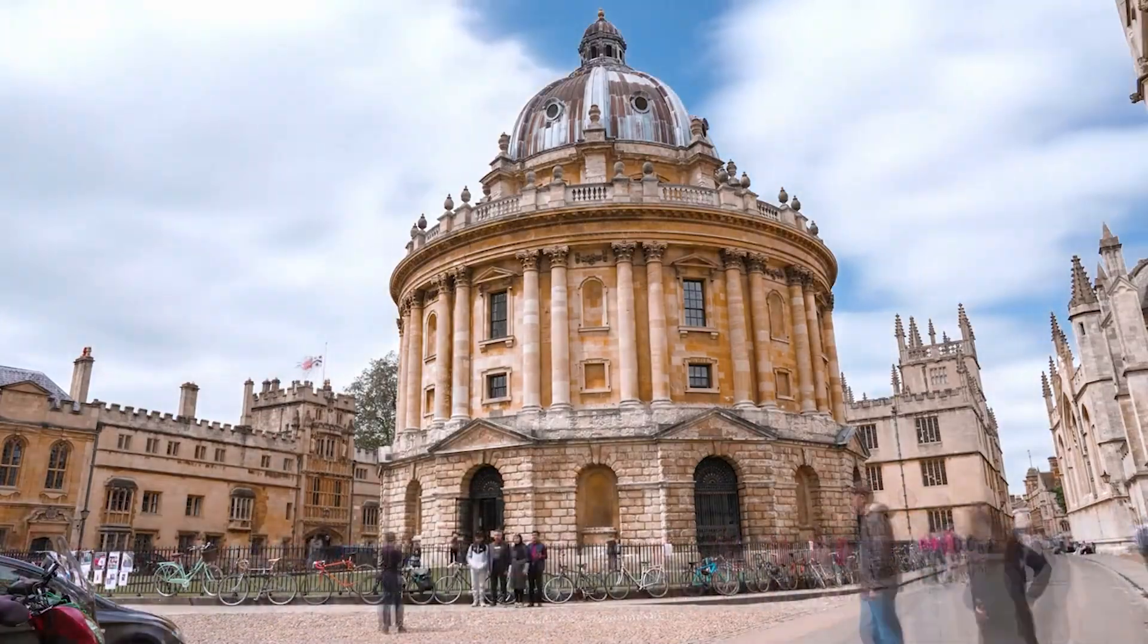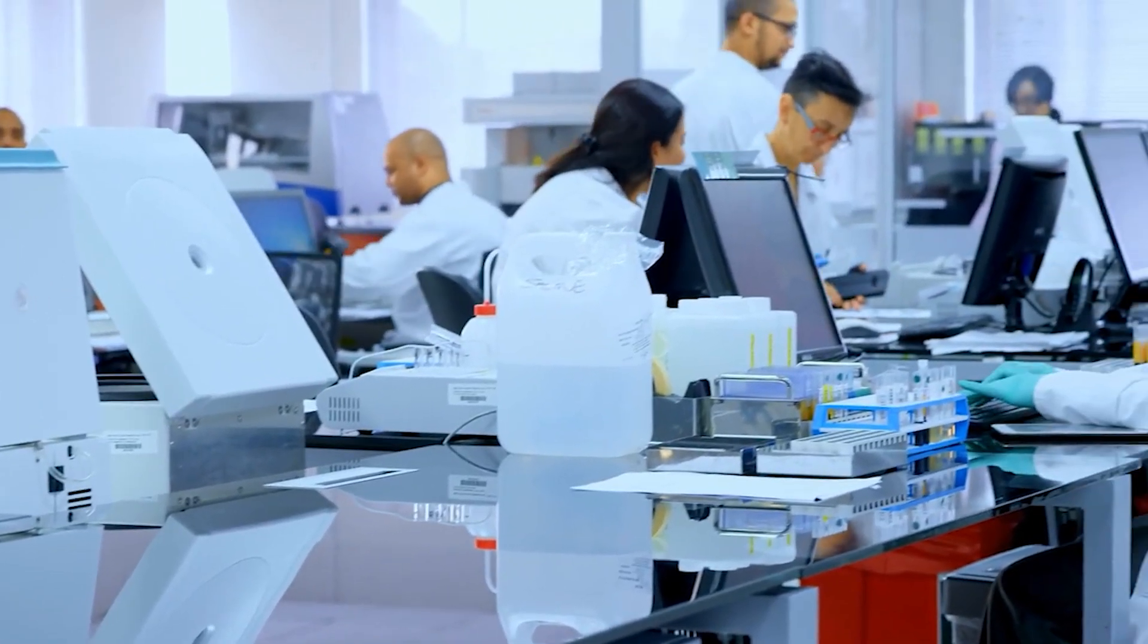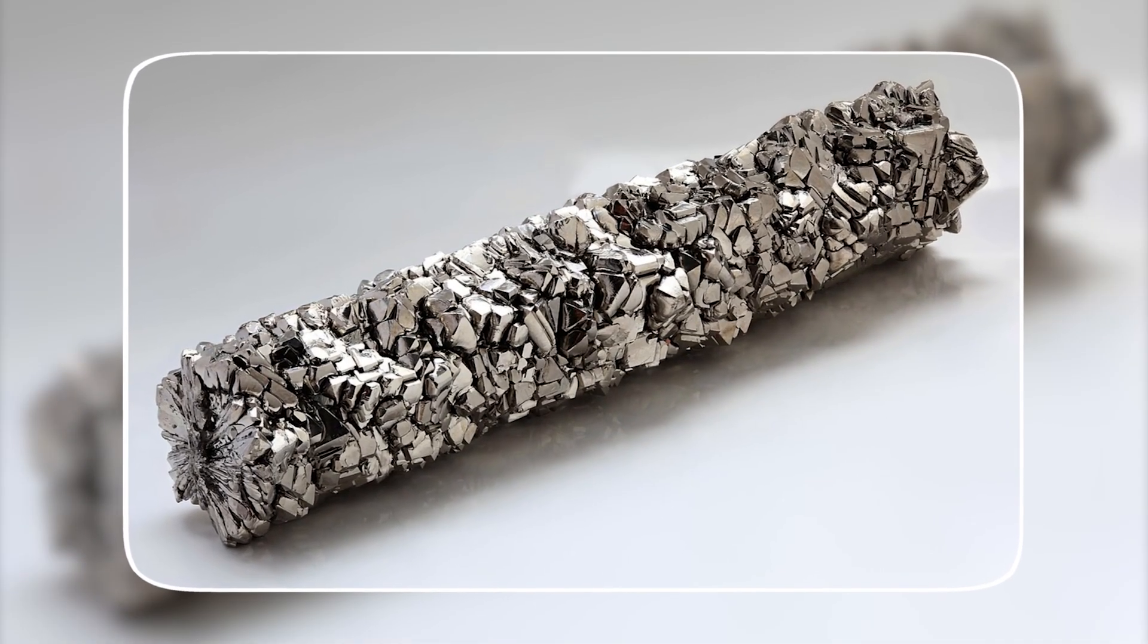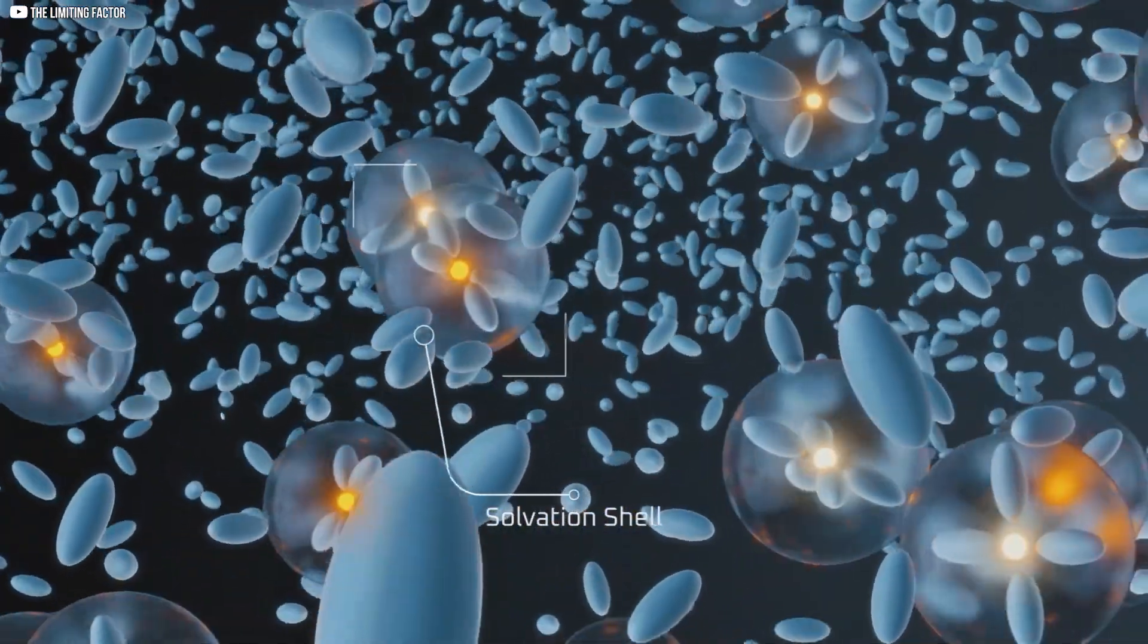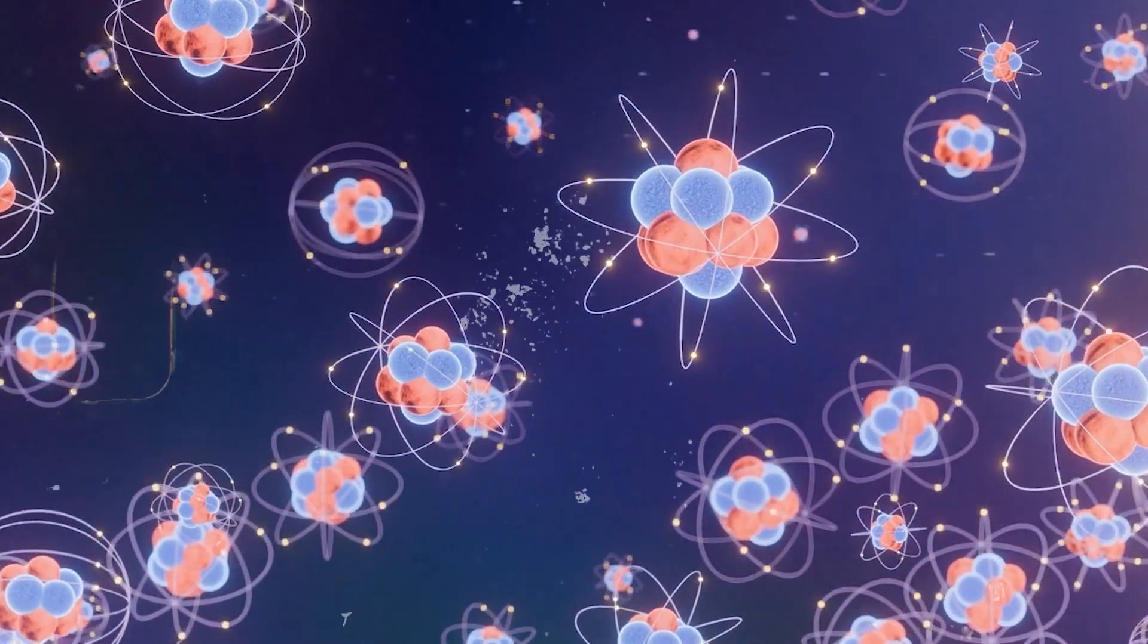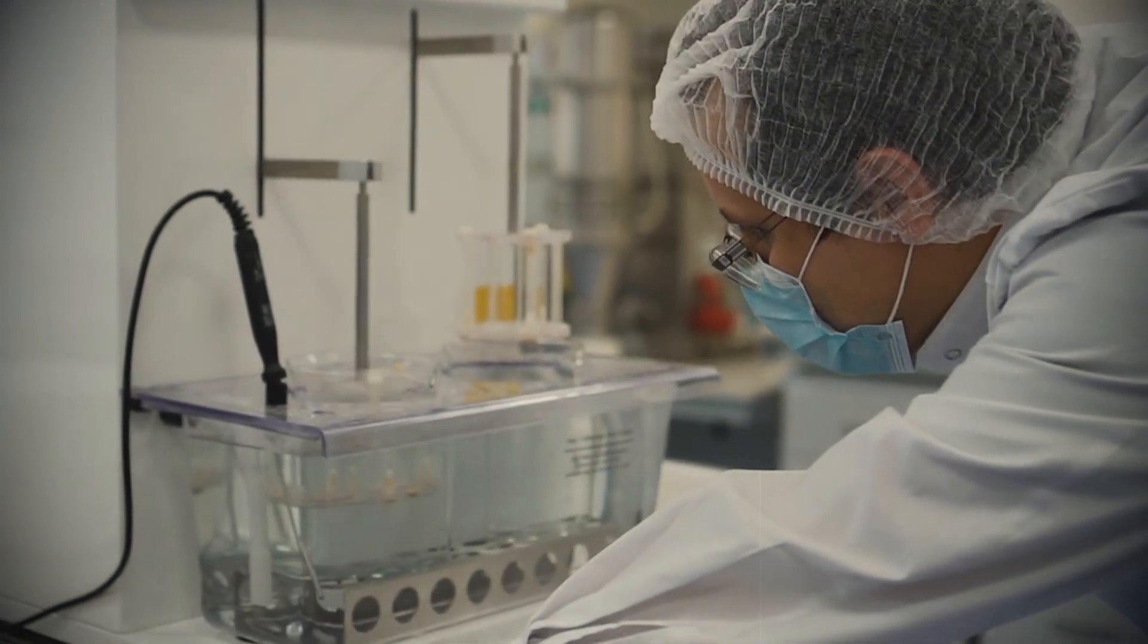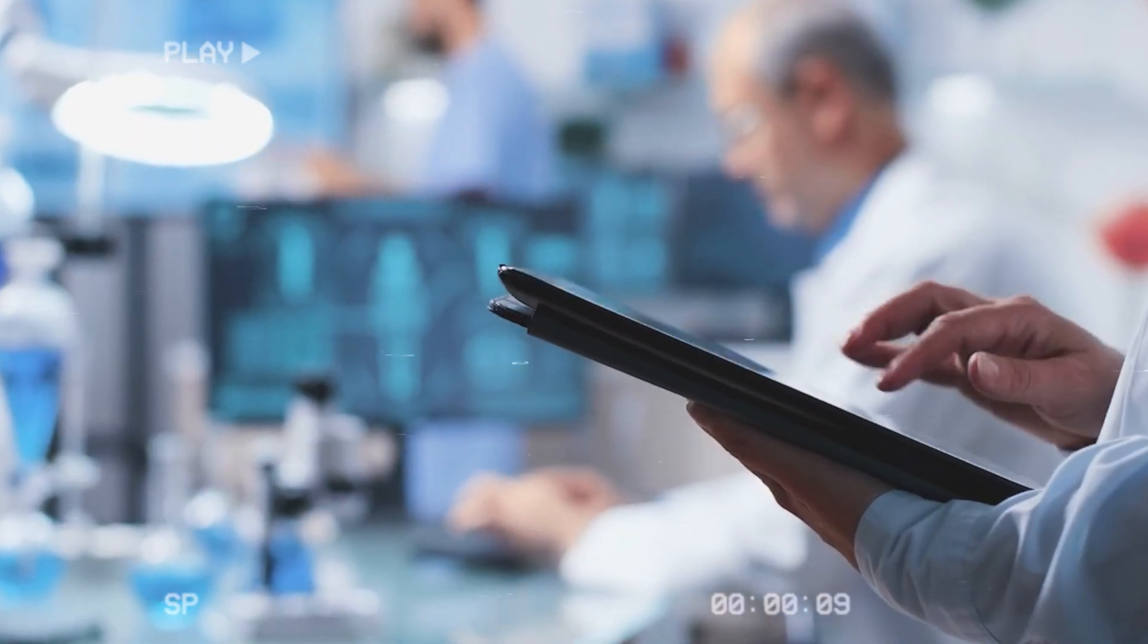At Oxford University, physicist John B. Goodenough studied Whittingham's findings with new eyes. He believed the cathode material was holding the cell back. Titanium disulfide offered only modest voltage. Something more powerful had to exist. Goodenough turned to transition metal oxides, materials with a strong appetite for electrons. Lithium cobalt oxide stood out. When tested, it delivered nearly 4 volts per cell. Almost double Whittingham's results.